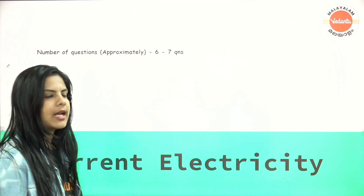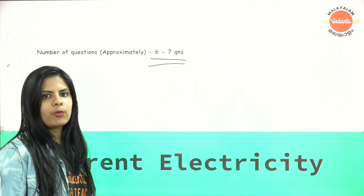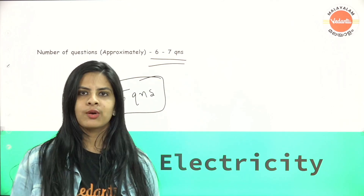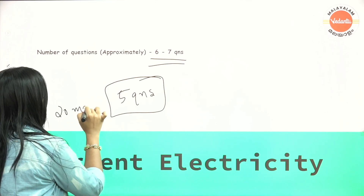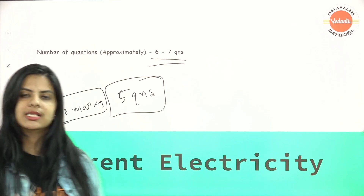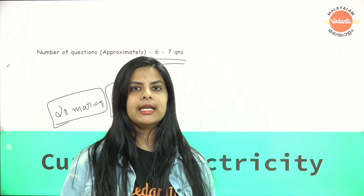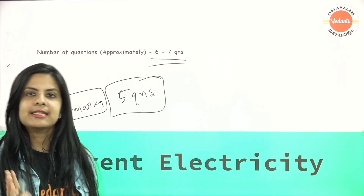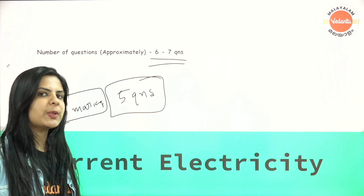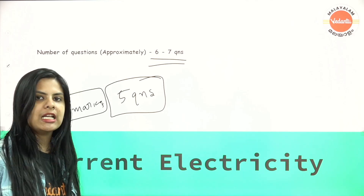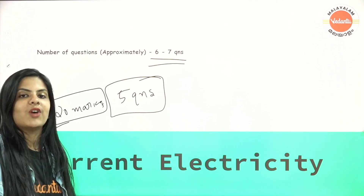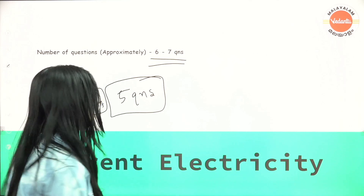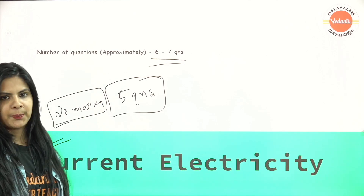Current Electricity has 6 to 7 questions. If you study current electricity well, you can score around 20 marks from it. It is not a complicated topic, and solving previous question papers on this topic makes it very manageable. Current electricity is a top priority single chapter.